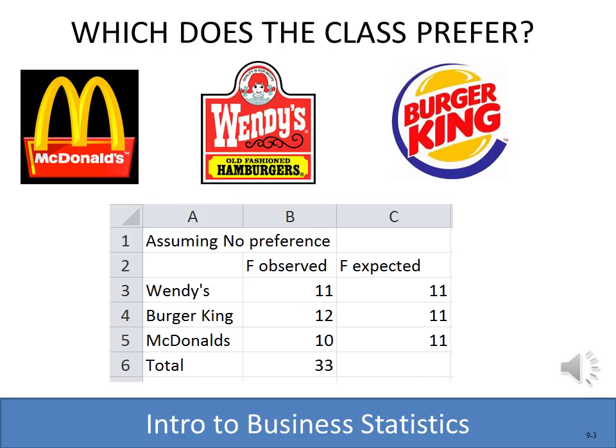Let's start with a simple example. Assume I had a live class and I was surveying whether or not there was a difference in which fast food students preferred. I'd ask for a show of hands: how many prefer McDonald's, how many prefer Wendy's, how many prefer Burger King. My sample results might be 11 preferred Wendy's, 12 preferred Burger King, and 10 preferred McDonald's. If there is no difference, the frequency expected would be 33 divided by 3, since there are three categories — so I would have expected 11 for each, and that isn't exactly what I got.